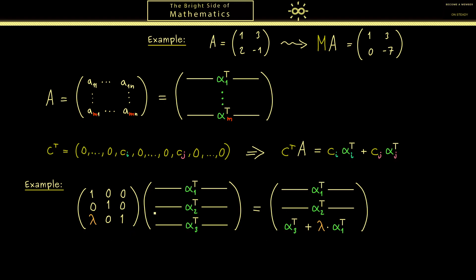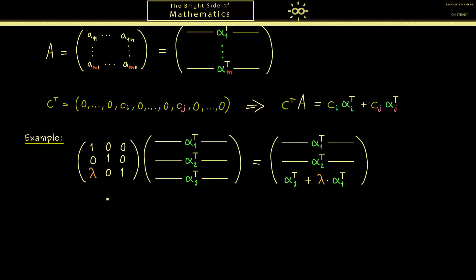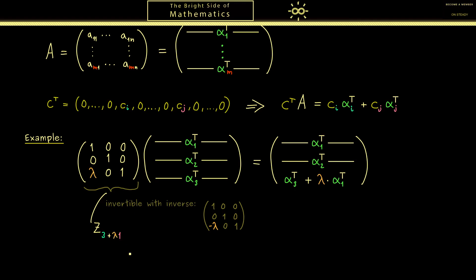In summary, this 3x3 matrix describes the row operation we want, and it's an invertible matrix. We can immediately write down the inverse: we simply undo the row operation by subtracting the first row — the matrix looks exactly the same but with minus lambda. We give this matrix a name: Z with index 3 plus lambda 1, meaning we change the third row by adding lambda times the first row. This symbolic index tells you which operation is done.